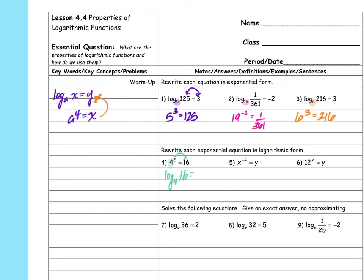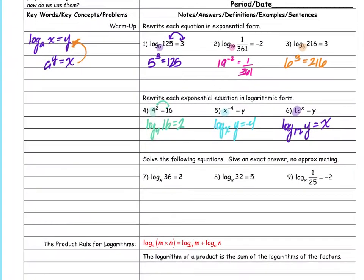The two values switch places: log base four of 16 equals two. Then the base of the exponent becomes the base of the logarithm, giving log base x of y equals negative four. And the last one with base 12: log base 12 of y equals x. Any questions so far?